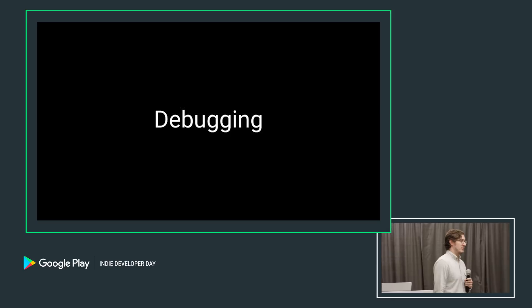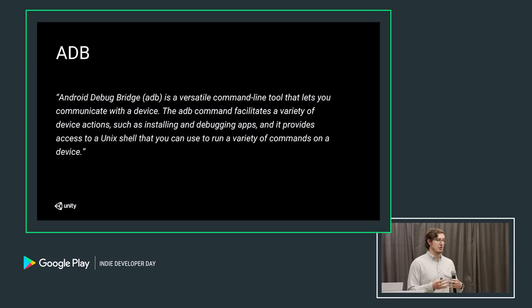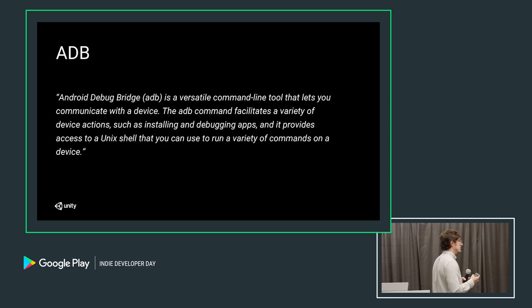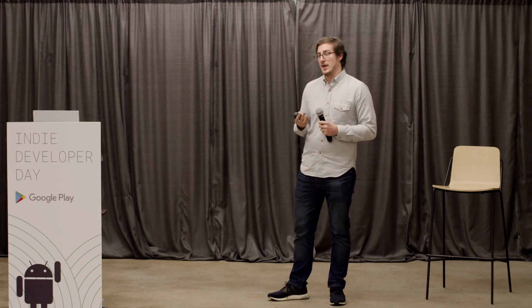Now I want to dive into debugging — a process I go through when developing any apps on Android. For this I use ADB, the Android Debug Bridge. It's a robust command line tool that allows you to link in directly to your Android device. You can do this through USB by just plugging in your device, opening up the ADB console, and then using various commands and flags to get information back.